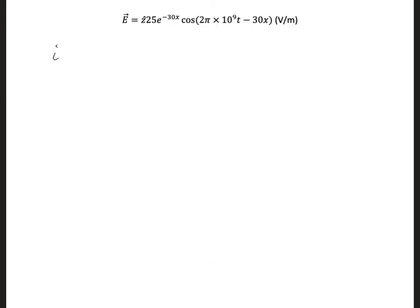In part I, we want to convert this time domain electric field expression to the phasor domain. So we're going to get a vector phasor now. The direction is the same, z hat. Amplitude 25 is the same, so is the e to the minus 30x. That's the same in the time domain as it is in the frequency domain, the phasor domain.